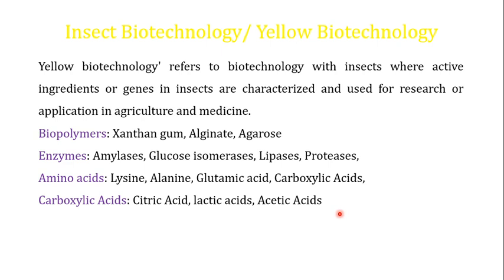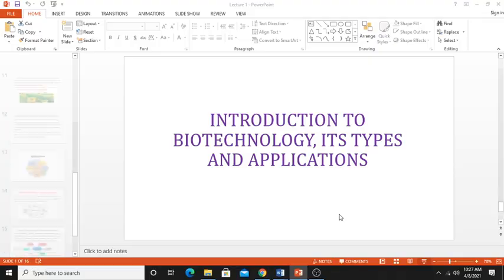These biotechnology types may overlap with each other — for example, medical biotechnology and industrial biotechnology can overlap. These classifications are meant to give a broader view of the types of biotechnologies; they may sometimes merge, and one thing can fall under both medical and industrial biotechnology headings. If you like the video, please subscribe to the channel, hit the like button, and share it with your friends.